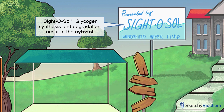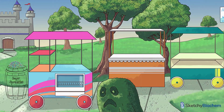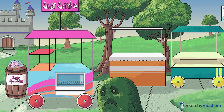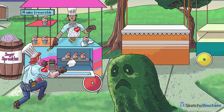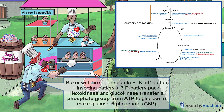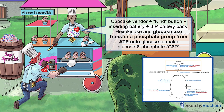Now that you know some general features, how do we make glycogen? We'll start with glucose, illustrated by the sugar sprinkles. Depending on where this glycogen is going, either hexokinase or glucokinase uses ATP to trap glucose inside cells by making glucose 6-phosphate, or G6P. This step is irreversible, meaning those enzymes can't turn that G6P back into glucose. The baker with a kind button using a P battery to power up that oven is hexokinase — note the hexagon spatula. Meanwhile, the cupcake vendor with a kind button, also replacing the P battery in the P battery oven, is glucokinase. Season passes are available.